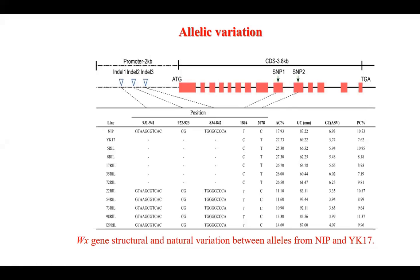To further investigate, one of my lab mates conducted another experiment: we knocked out the Waxy gene in both parents of this population — Nipponbare and YK17 — using CRISPR-Cas9 technology with the pCambia 1300 vector. We knocked out the Waxy gene in these two backgrounds and found that the knockout led to a glutinous rice phenotype, which was published in a subsequent study.